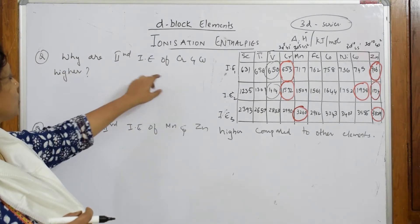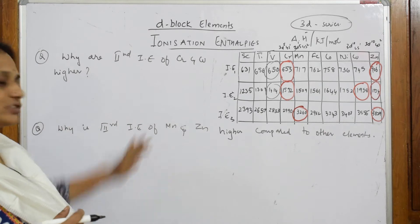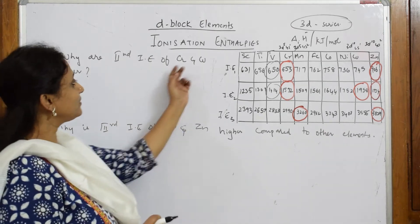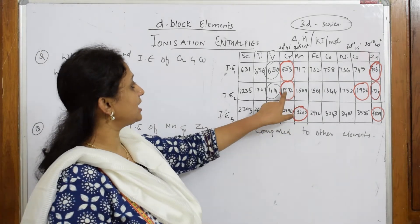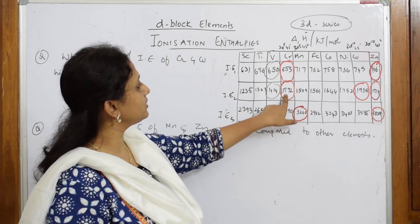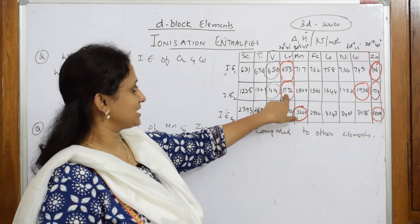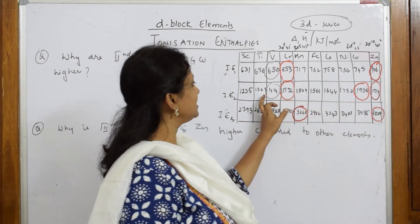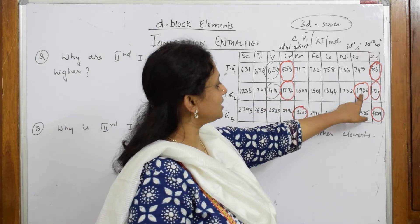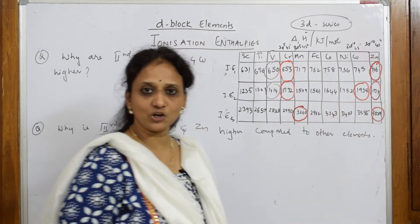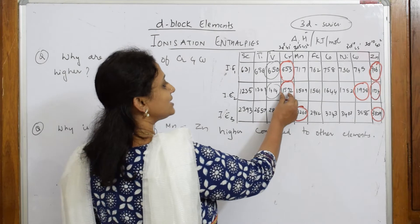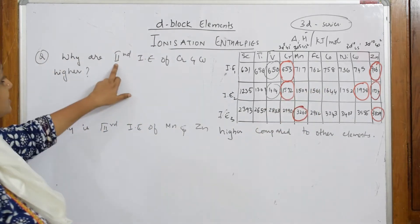Let's see this question: why are second ionization enthalpies of chromium and copper higher? Both these questions are similar, but only the elements are different. Now, the second ionization enthalpy for chromium is 1592, higher when I compare to all these, and copper is 1958, higher when I compare to these two. That is one anomaly. So they're asking us why this is higher.